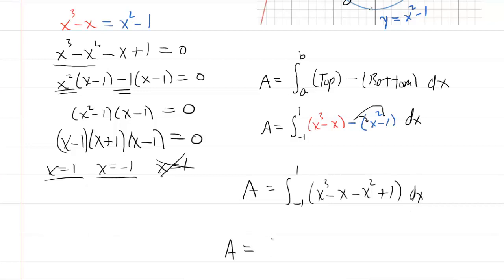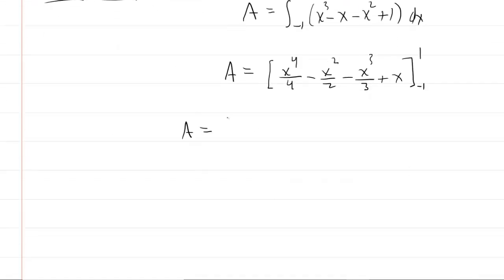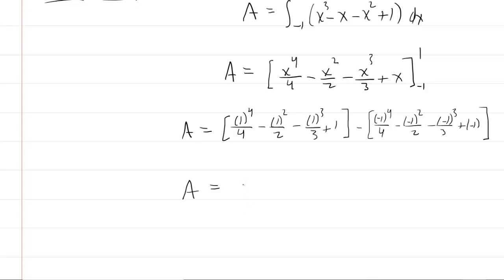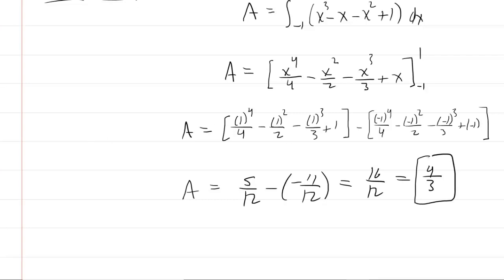These are simple power rules. Integrating gives x to the fourth over 4, minus x squared over 2, minus x cubed over 3, plus x, evaluated from negative 1 to 1. Plugging in the upper bound of 1 gives 5 twelfths, and plugging in the lower bound gives negative 11 twelfths. Combining those: 5 twelfths minus negative 11 twelfths equals 16 twelfths, which reduces to 4 thirds. So the area is 4 thirds, which we'll use in calculating the centroid coordinates.